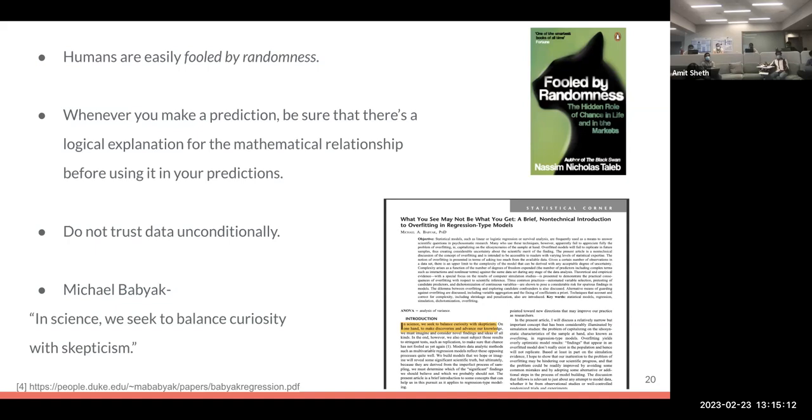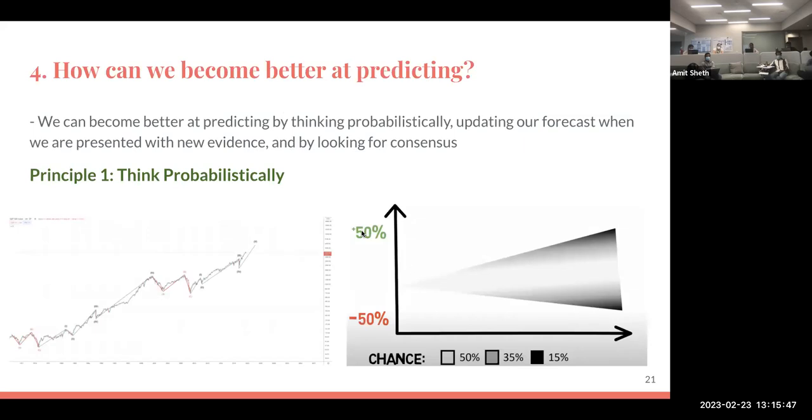Nate Silver also points to another research done by Michael Babay in his research paper 'What You See May Not Be What You Get.' He says that in the first introduction, in science we seek to balance curiosity with skepticism. That also relates to this concept and talks about the hyperactive pattern recognition in humans.